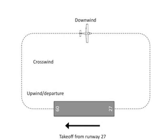This is the downwind. On the downwind, the wind is pushing you, so you'll go faster than your airspeed indicator shows. Air traffic controllers prefer to integrate planes into the downwind, simply because it's the longest leg in the pattern and allows them to control traffic more easily.